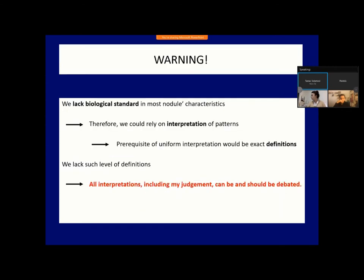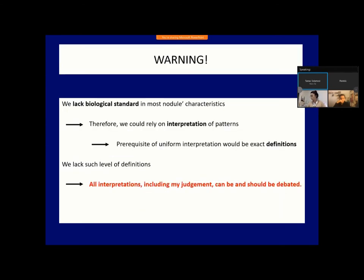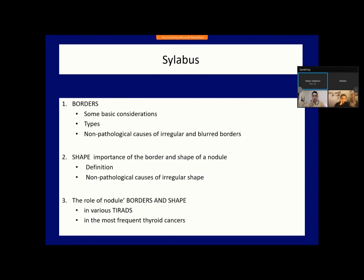I first show the usual warning. Our current topic represents the two opposites regarding the thoughts behind this warning. The shape is the most accurate feature of the nodule with the lowest inter-observer variation — we simply have to measure the largest diameters of a nodule according to the three dimensions. In contrast, the nodular border is the characteristic in which the inter-observer variation is the largest or largest but one. The framework of this presentation covers first the borders, then the shape, and finally their role in thyroid systems and in the most frequent thyroid cancers.